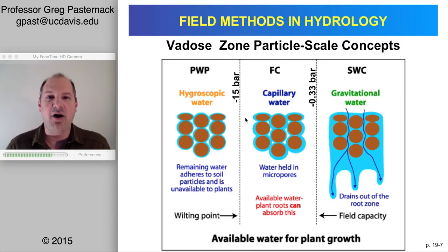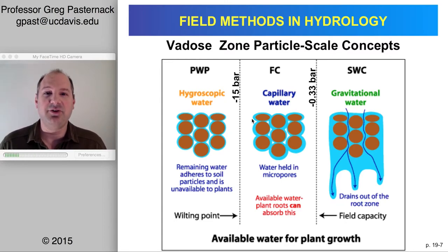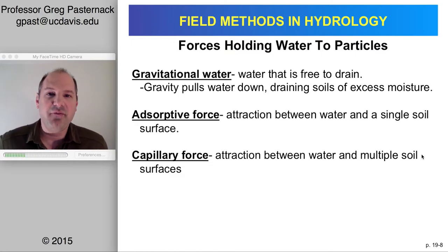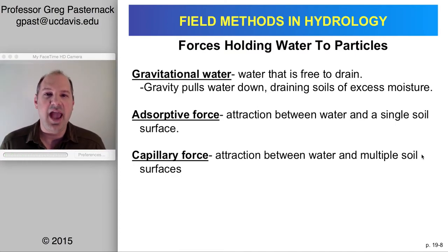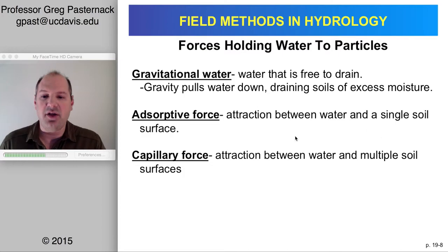To find what water content is associated with these pressure values for any particular soil, you need to measure both pressure and water content. Just to recap on forces: gravity allows water to infiltrate or flow down. As conditions become drier, the soil holds water through adsorptive forces — the attraction between water and individual soil particles — and when you look at many particles in aggregate, we call that the capillary force.